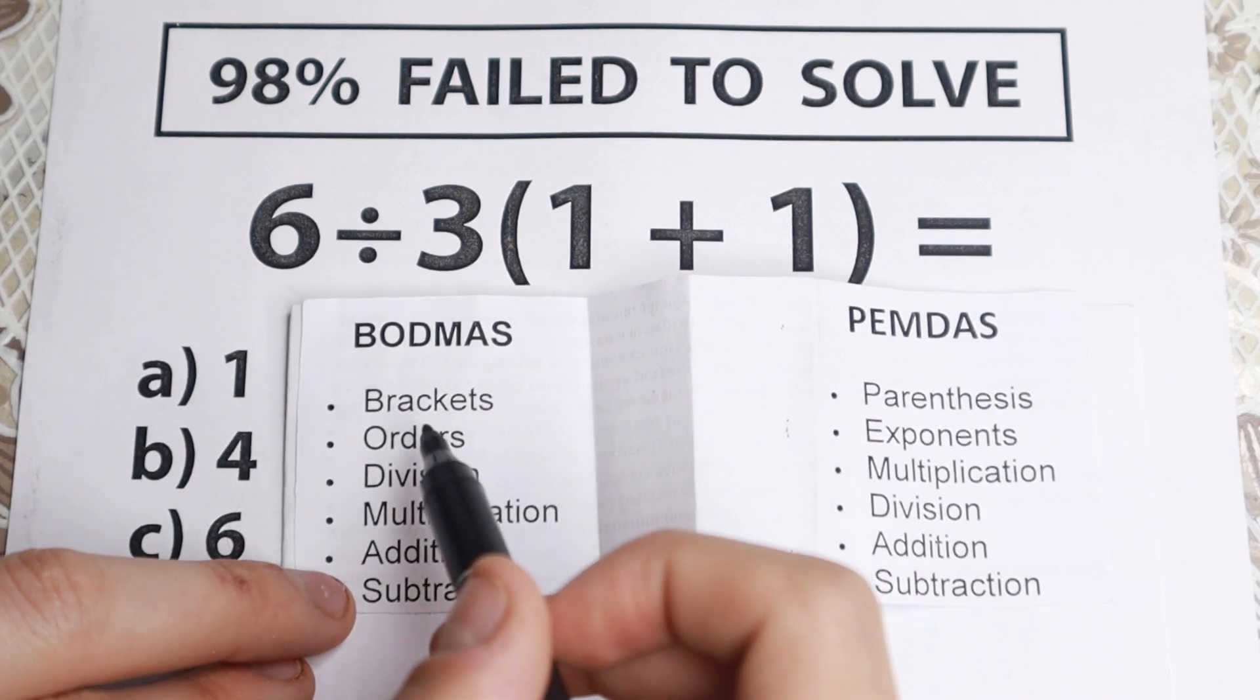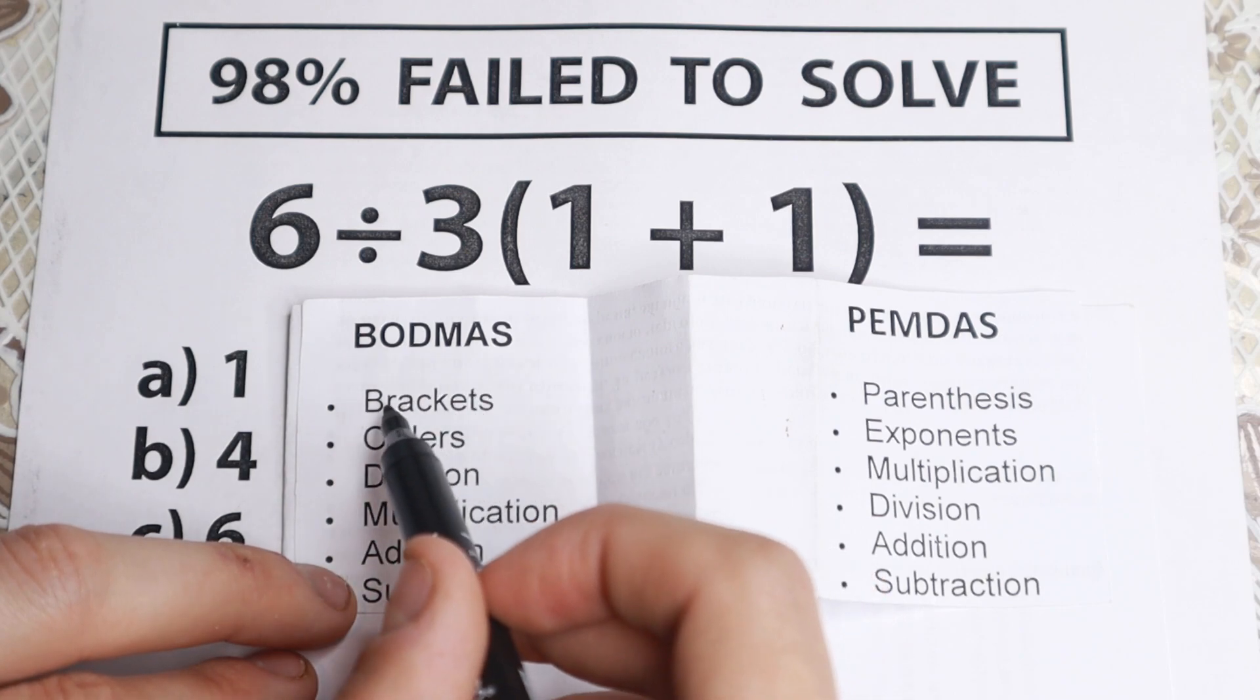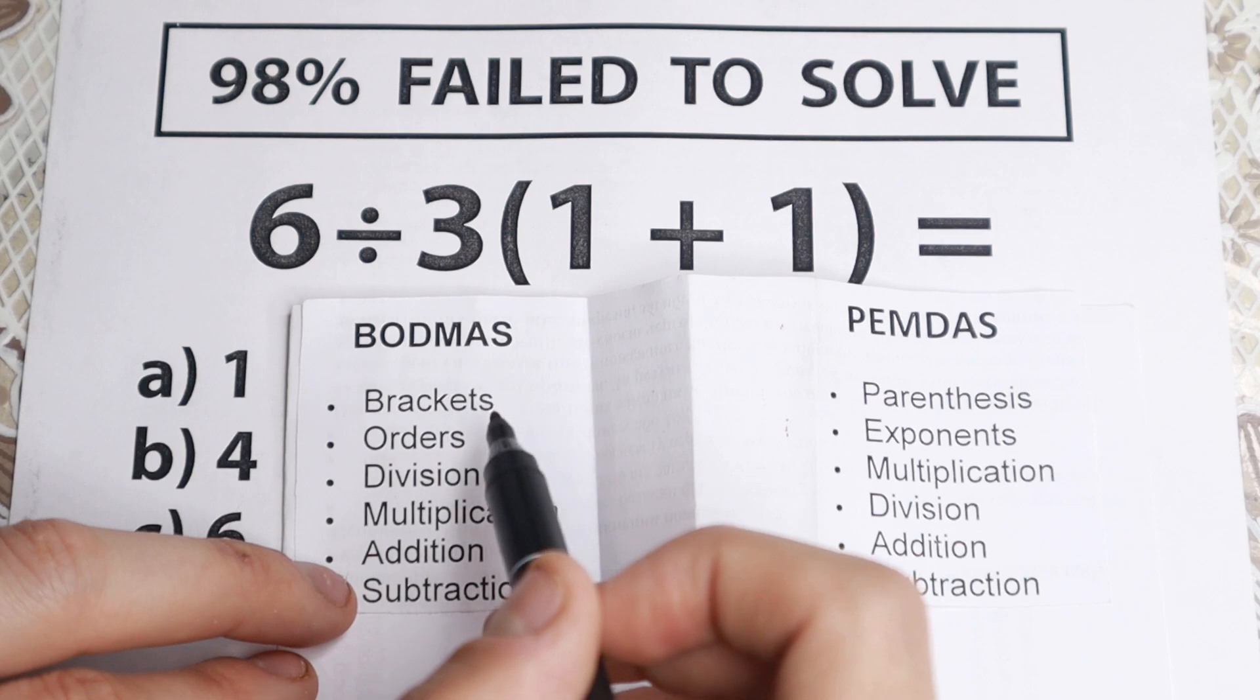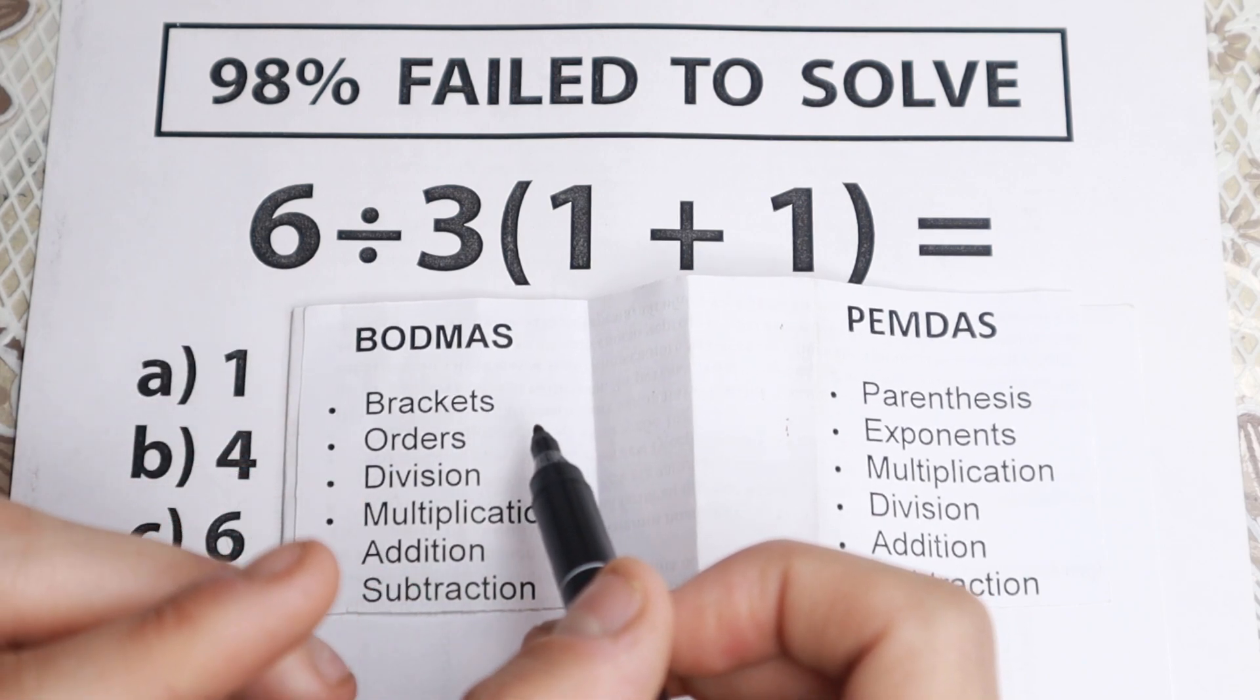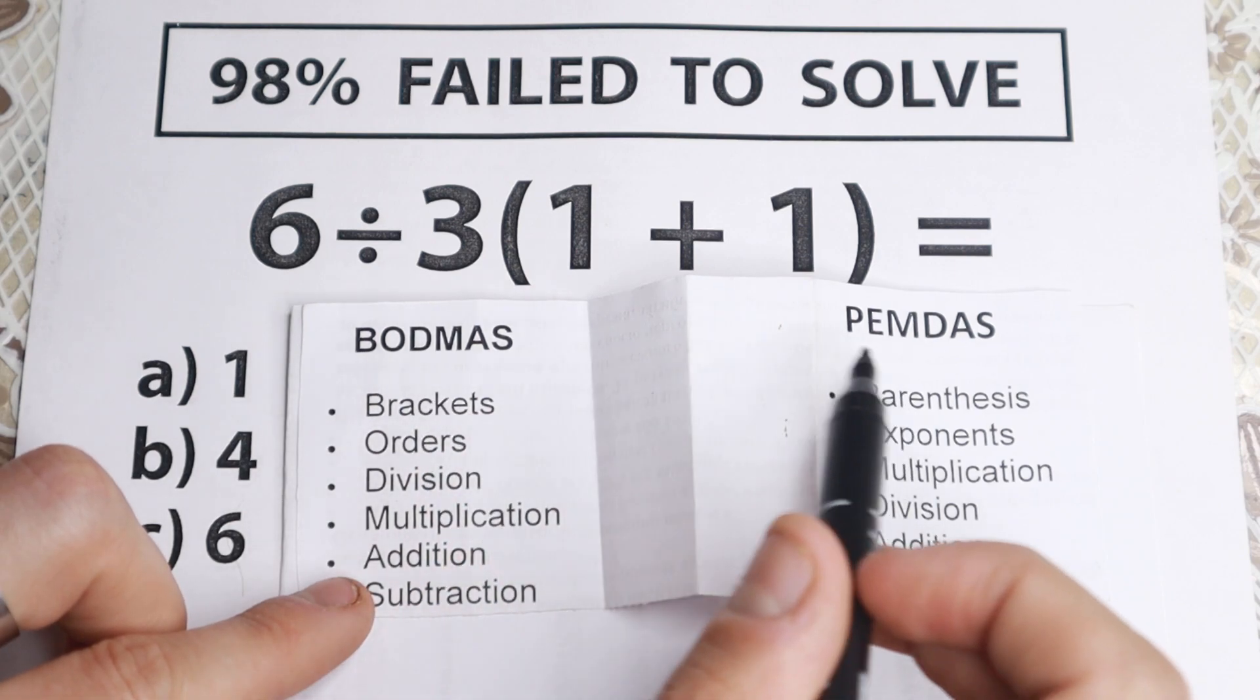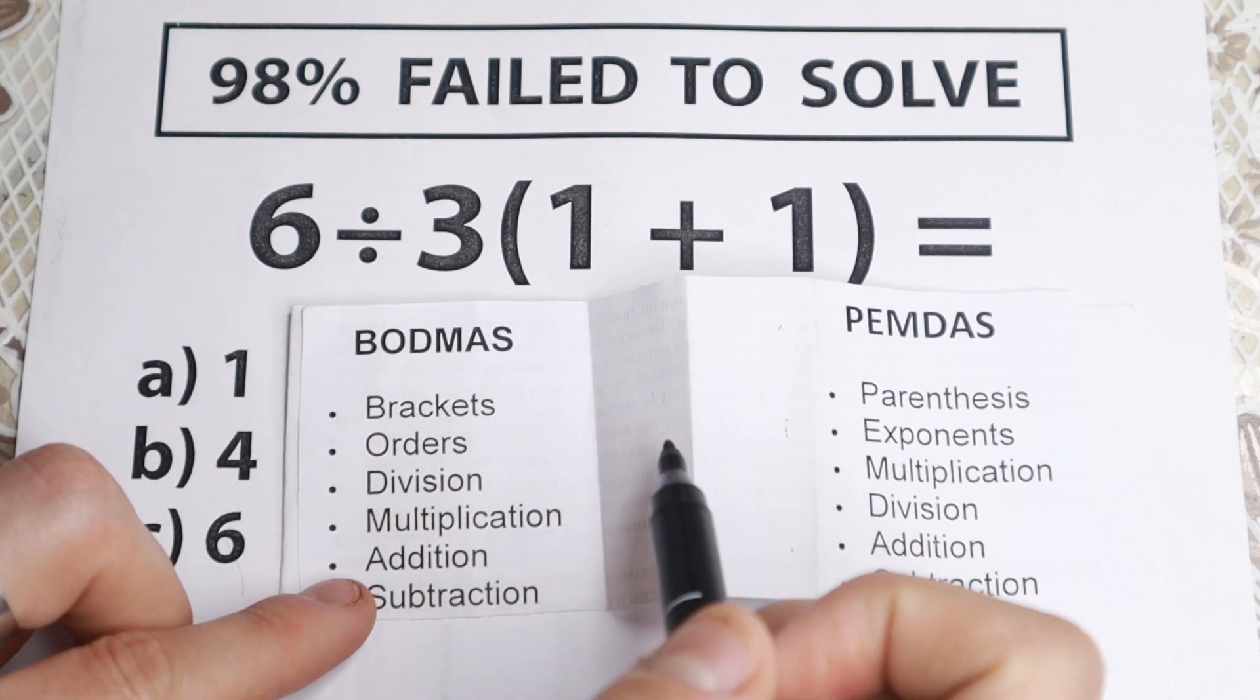As you can see right here, first of all we have a really interesting first step. We have brackets and we have parentheses in both methods, in both orders of operations. So it will not be a mistake for us when we start with brackets. Using two orders of operation we need to start with parentheses.